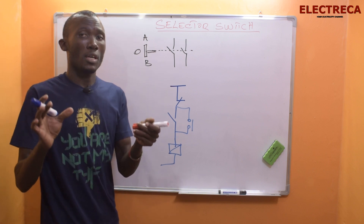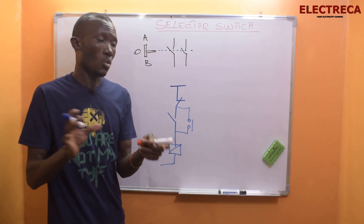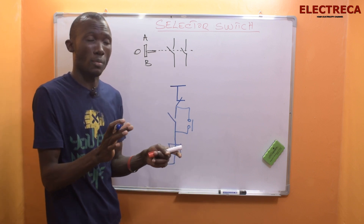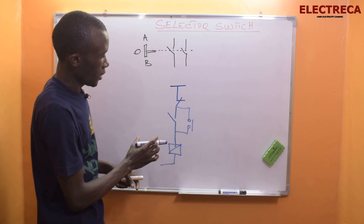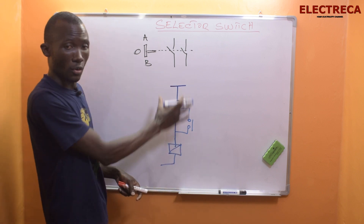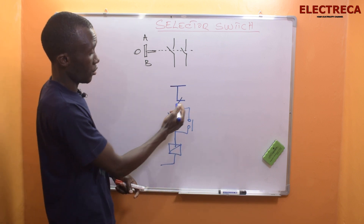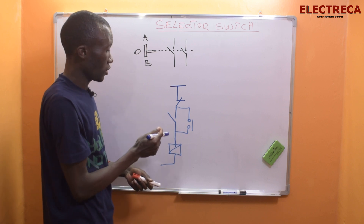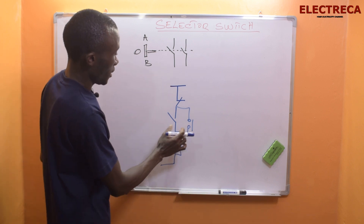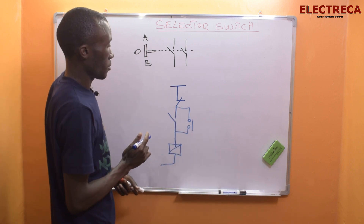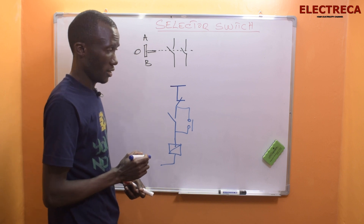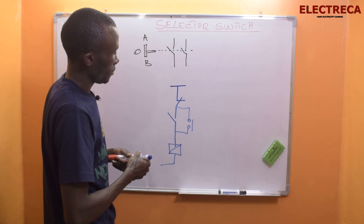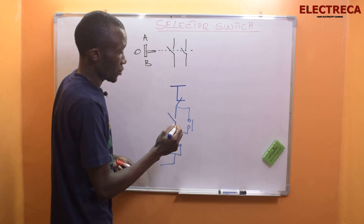So you remember in the previous video where we demonstrated the self-holding circuit? Now you have your self-holding circuit here — you have your start, you have your stop button right here, and then you have your holding contact. Now we have a selector switch here as well.